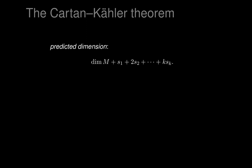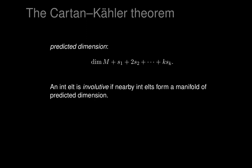Out of those characters we construct a number called the predicted dimension: the dimension of the manifold plus the sum S_1 + 2S_2 + ... + kS_k, where k is the dimension of the largest integral element in the flag. An integral element E_P is called involutive if all the nearby integral elements of the same dimension form a manifold of exactly the predicted dimension.